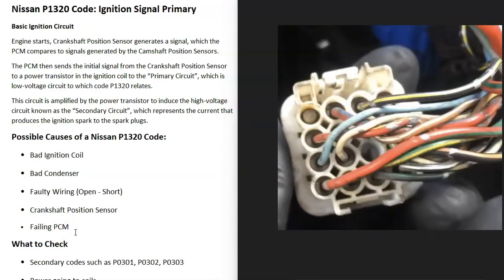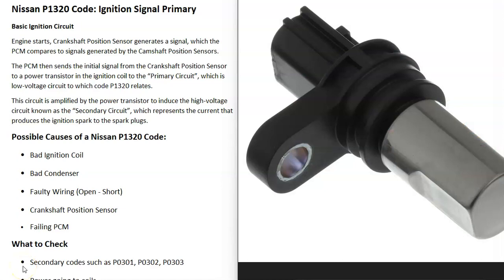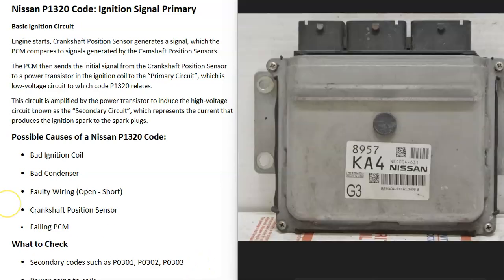Faulty wiring is another possible cause — this includes wiring going to all the ignition coils, back to the computer, and to the crankshaft position sensor. An open or short in the wiring will cause issues. A bad crankshaft position sensor can also trigger this code, though it's less common. Usually a failing CKP sensor will generate other codes as well, so pay attention to any secondary codes. ECM failure is also possible, though fairly rare.